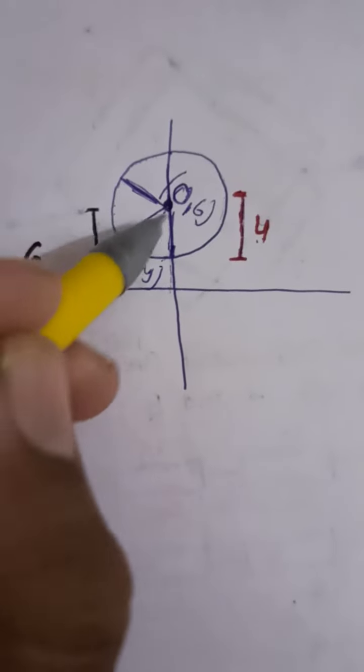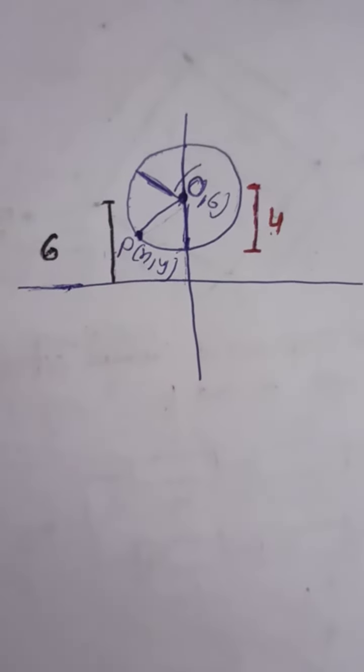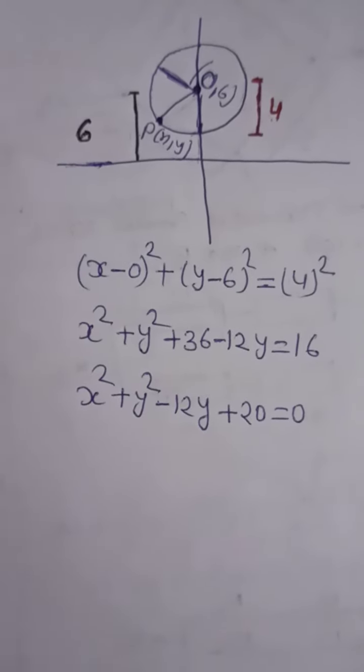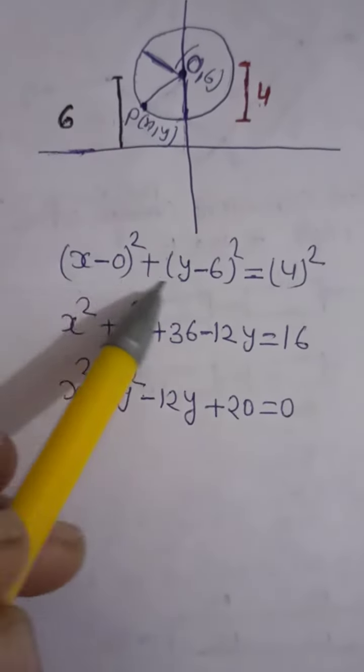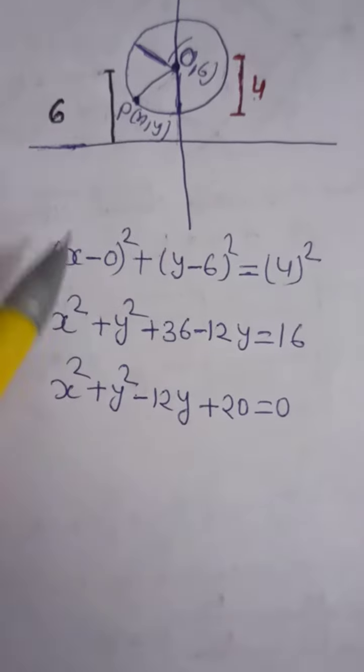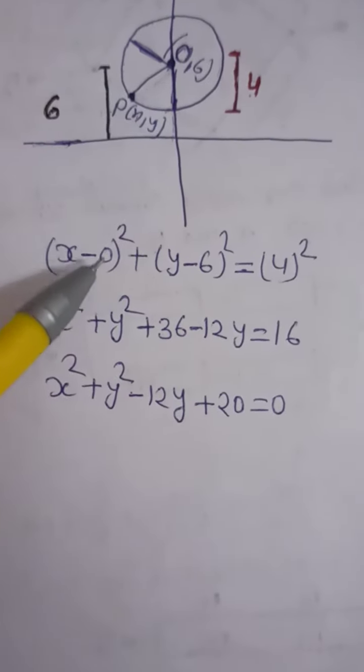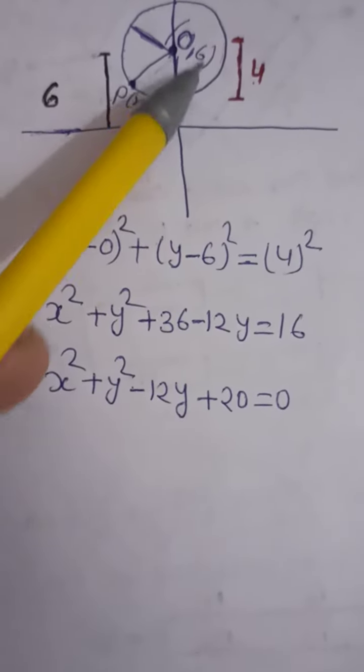Now we have to find the equation of this circle, so the locus of the circle is the distance formula. You can see that I am using the distance formula: (x2 - x1)² + (y2 - y1)².